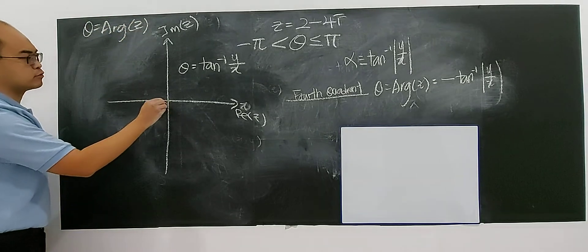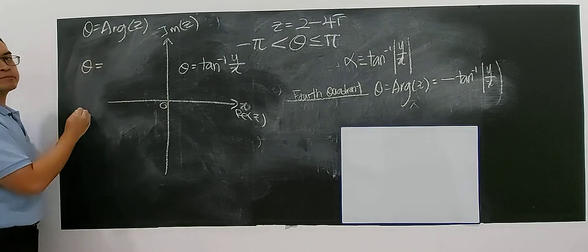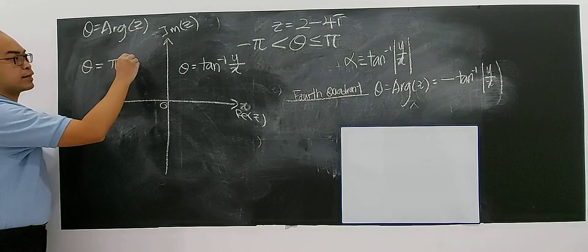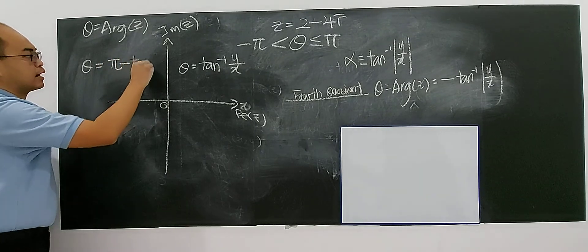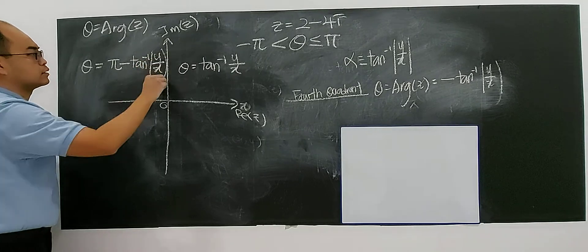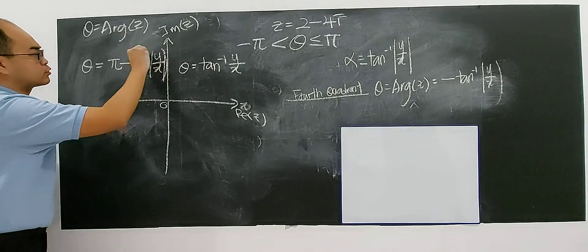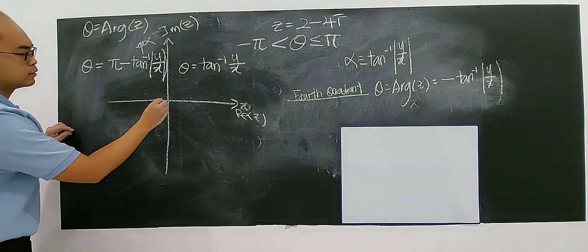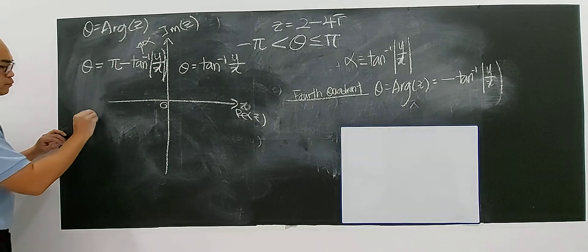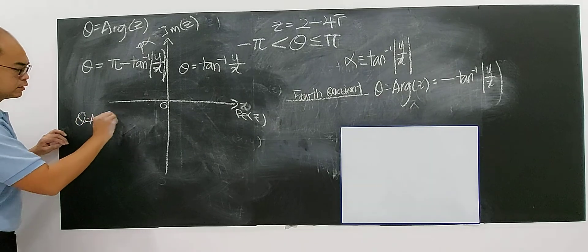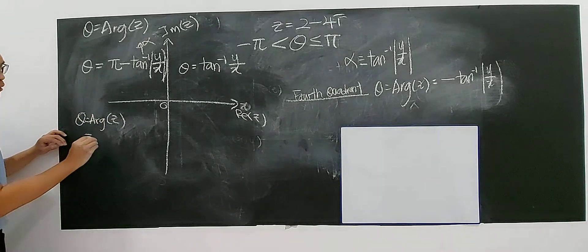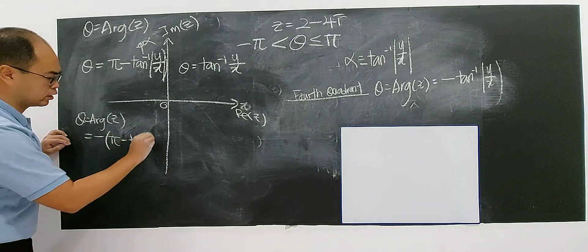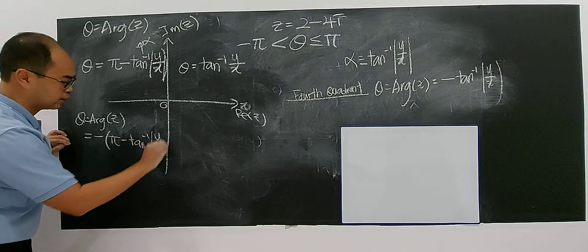For the second quadrant, the argument will be pi minus arctangent of modulus y over x. For the third quadrant, the argument of z will be negative pi minus arctangent of modulus y over x.